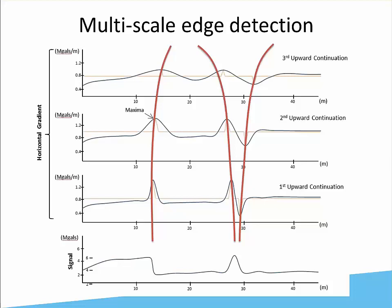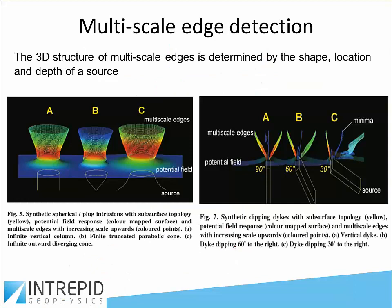Another way this is sometimes represented — from some of the original reports produced by CSIRO and ourselves back in 2004 — we show the original signal at the bottom with two significant transitions. As we upward continue that signal once, twice, and three times to different heights, the actual anomaly shape changes and the maxima move out from the original centre line. That's analogous to a fault contact, and here we've got more of a 3D body with an anomaly over the top like a plug — you get this characteristic broadening of where the high point in the signal is.